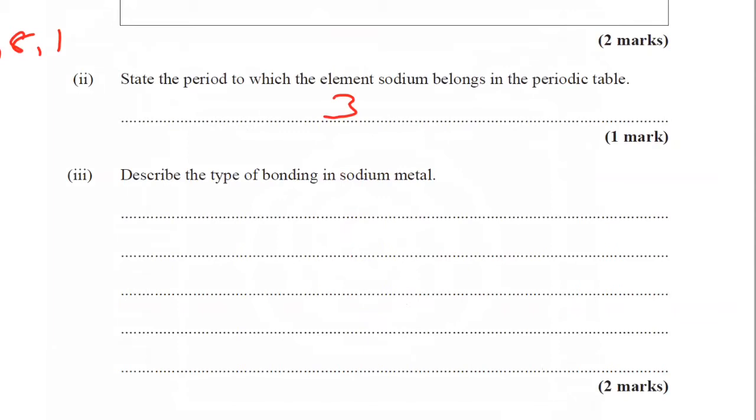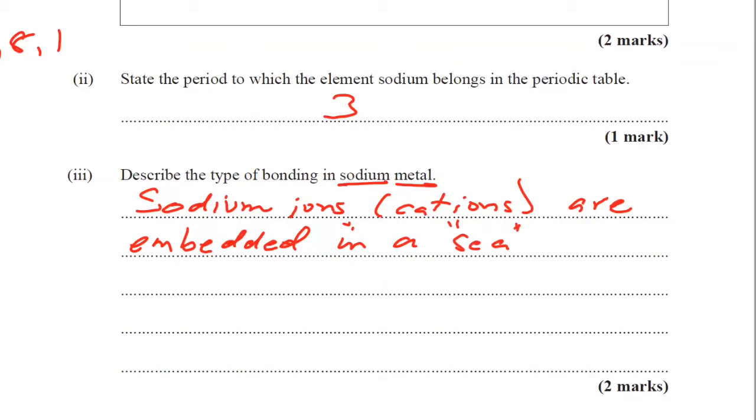Describe the type of bonding in sodium metal. So, it's sodium metal, they're talking about metallic bonding. So, we're going to just get straight to the point. We would have sodium ions, also known as cations. They're positive ions or they're positively charged cations. And so, these cations or these sodium ions are embedded. Key word there, embedded. Some students will say stuck. They're embedded in what is called a sea of mobile or you could say delocalized electrons. The students said that word last year and I got very excited. So, that would give us full marks.